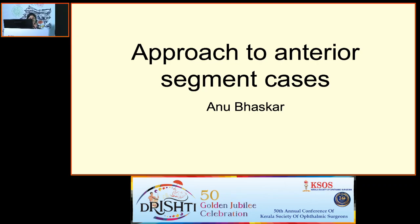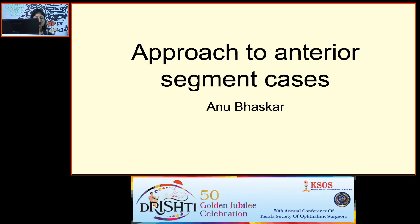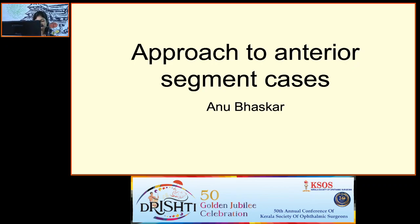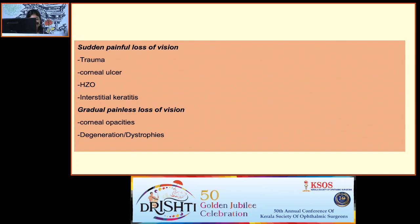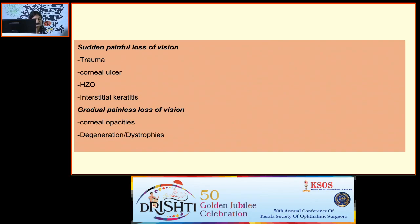Good morning. We will be discussing different anterior segment cases, starting with a case approach. Any case begins with a detailed history, then examination. Patients may present with sudden painful loss of vision — differentials include trauma, corneal ulcer, herpes zoster, or interstitial keratitis. Gradual painless loss of vision can be due to corneal opacities, degenerations, and dystrophies.